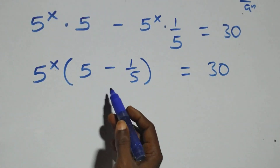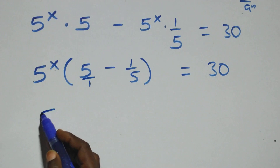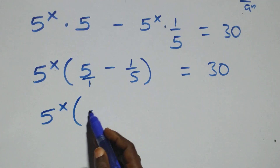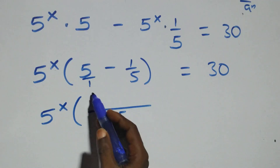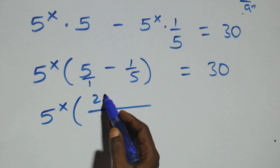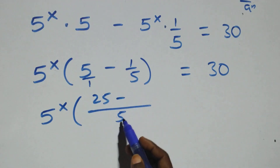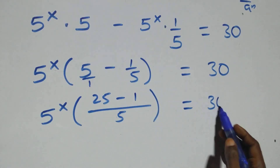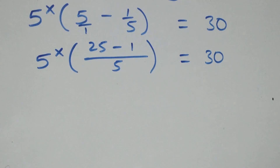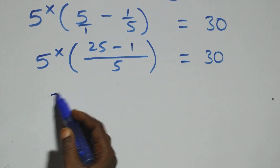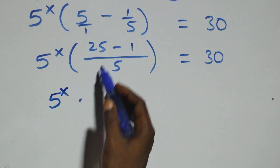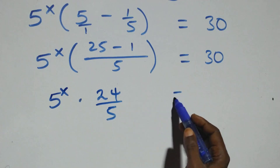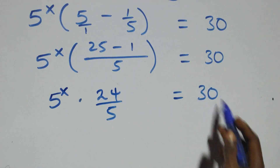We bring this together as a fraction. Writing 5 as 5 over 1, we get 5 raised to power x into brackets: 5 times 5 is 25 minus 1, all over 5. That gives 5 raised to power x times 24 over 5, which equals to 30.